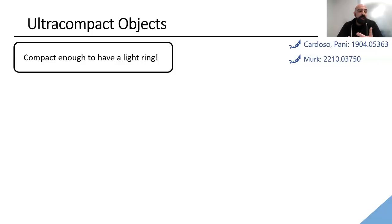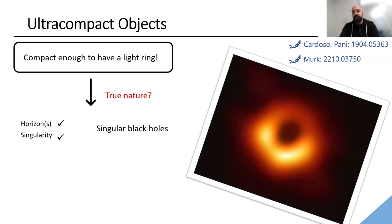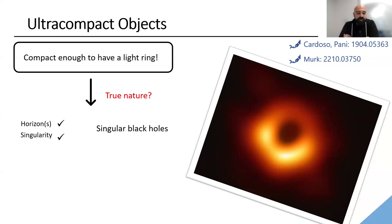Ultra-compact objects are objects compact enough to have a light ring, and we know such objects exist in nature — we have photographs from the Event Horizon Telescope. But their nature remains obscure. We typically model them using the Kerr paradigm, comparing observations from light rings and quasi-normal modes. One possibility is singular black holes, which have event horizons and singularities.